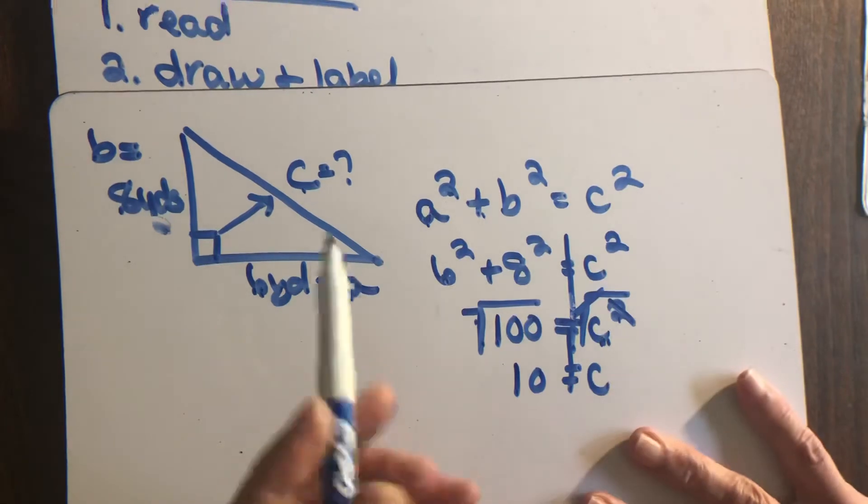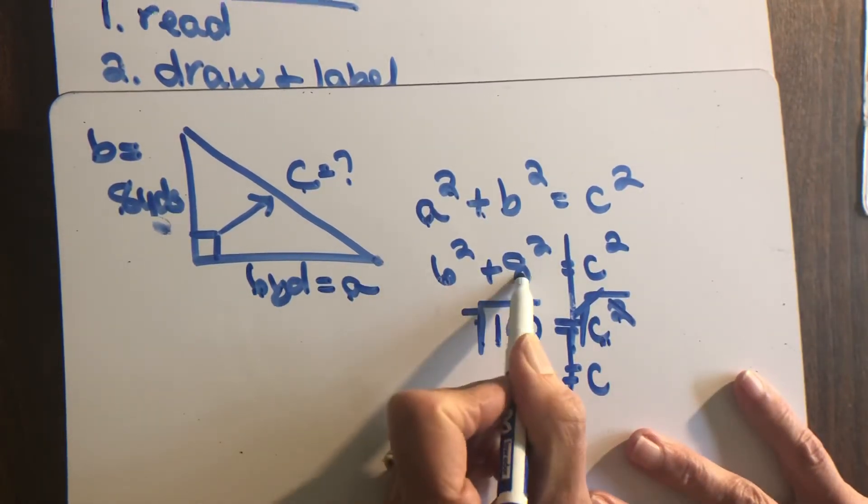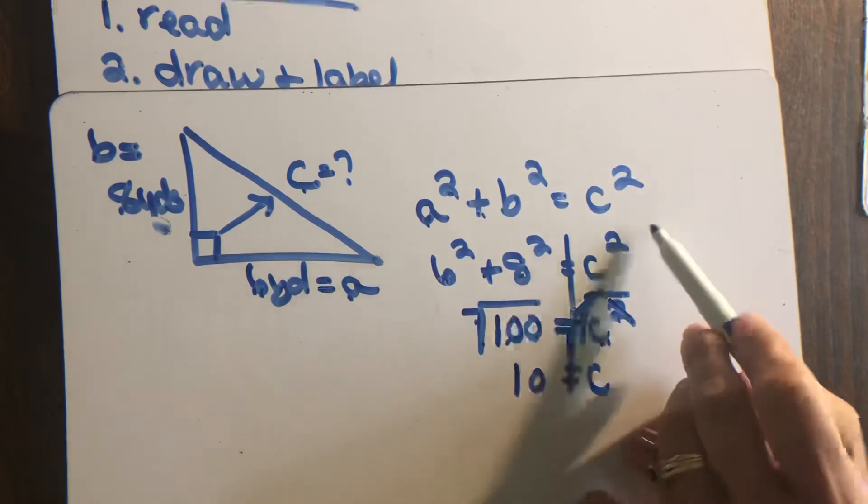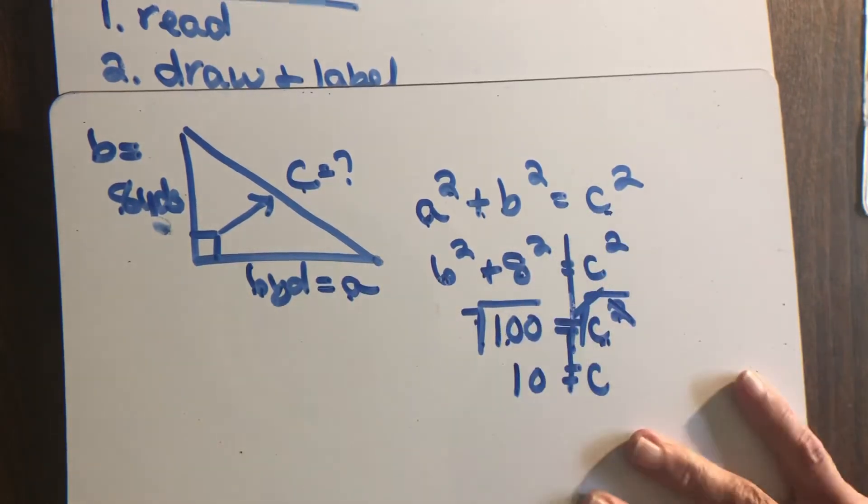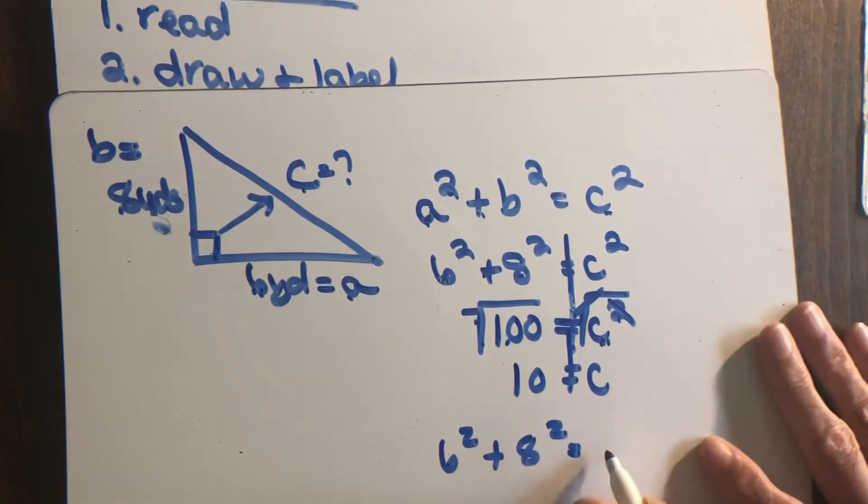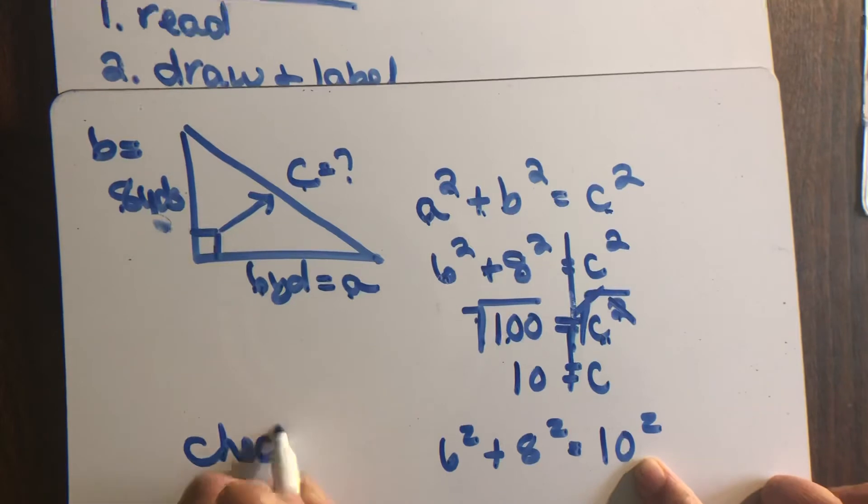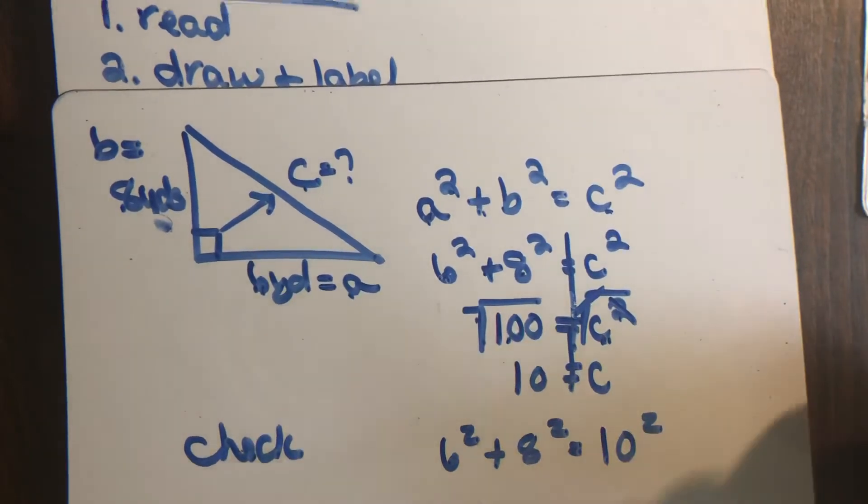Remember these two squared together and added was 100. So 10 squared is 100. So that would check back out. Six squared plus eight squared should equal 10 squared. And you can do the math on the calculator to make sure they equal so they check. That's how it is to solve for C.